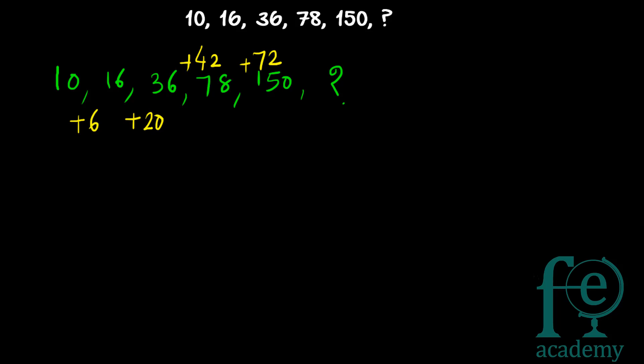6, 20, 42, 72 — is there any connection? This is the kind of question that once you solve, you'll be able to recognize it in the examination hall. For competitive exams, when you encounter this series for the first time you may not solve it, but if you practice once, you can easily solve it. 6, 20, 42, 72 is forming a particular series.